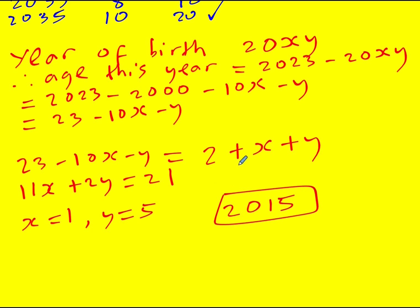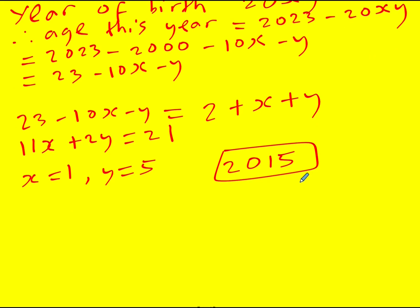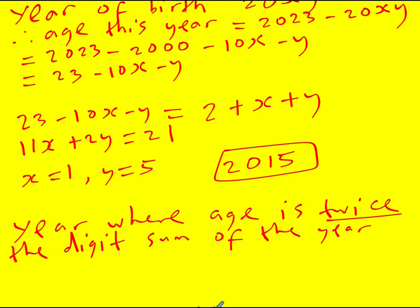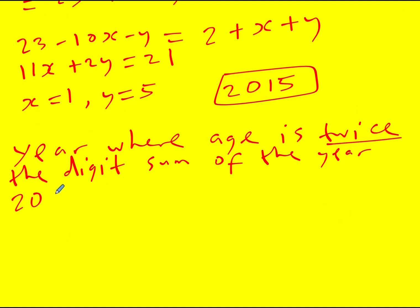Okay now we've got that. There's a year where age is twice the digit sum of the year. And let's call it 20pq now. So if we work out her age from this, remember she was born in 2015, so it's going to be, this is now a bigger number, so it's going to be 20, that's going to be 2000 plus 10p plus q